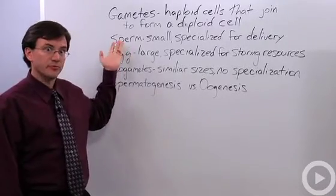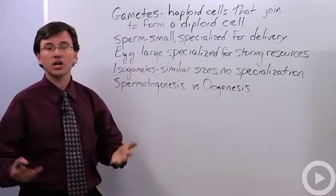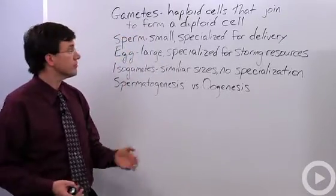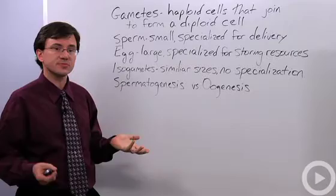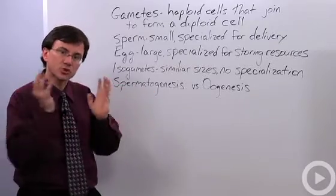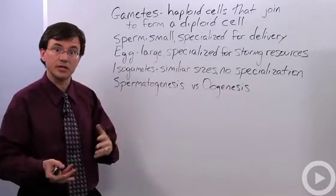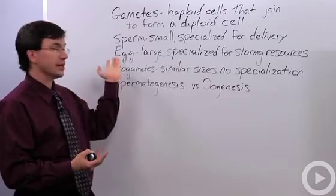You are hopefully familiar with sperm and egg, the two most common kinds of gametes that you've heard of. Sperm are small, specialized for quick delivery of the DNA to the other cell, the other kind of gamete.